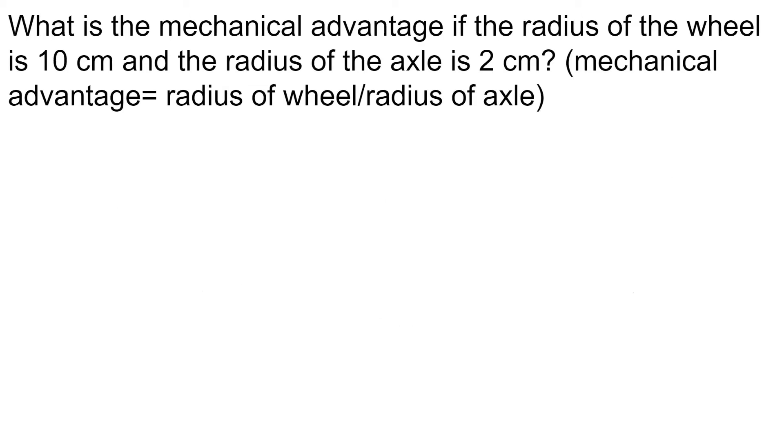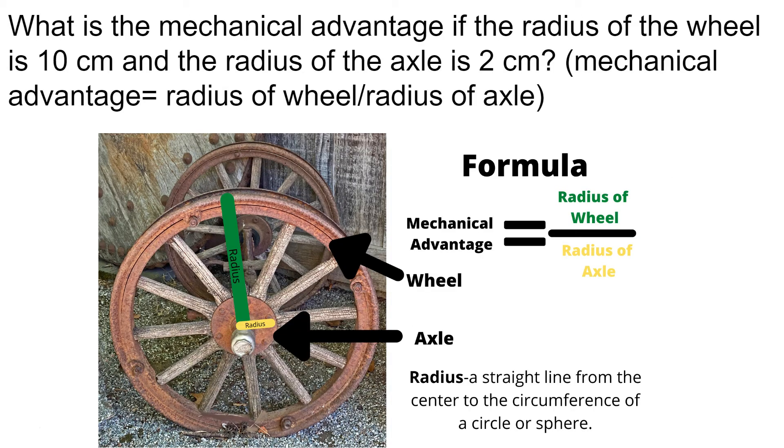Let's talk about mechanical advantage when dealing with wheel and axle problems. What is the mechanical advantage if the radius of the wheel is 10 cm and the radius of the axle is 2 cm?